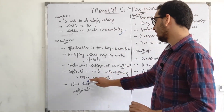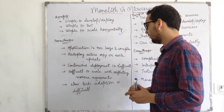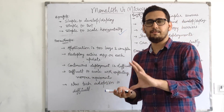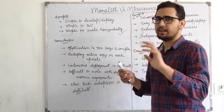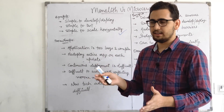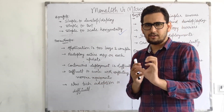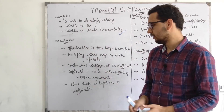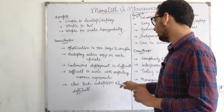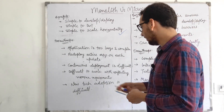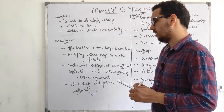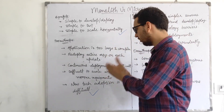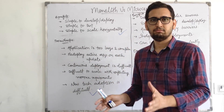It is also difficult to scale with conflicting resource requirements. Inventory might need more reads, orders need more writes, and payments need more third-party interaction — so different components have very different resource needs, making it hard to scale for one particular use case. Finally, new technology adoption is very difficult, since switching languages or technologies requires changing the entire codebase.